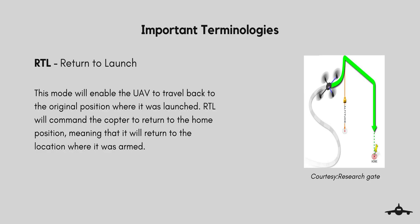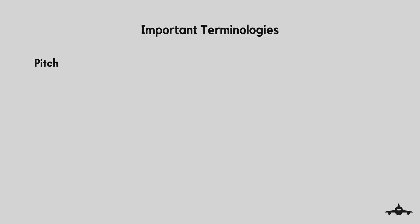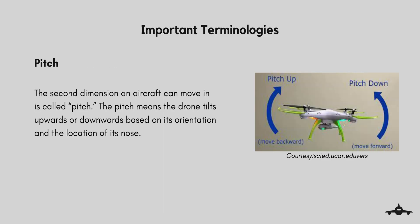RTL stands for Return to Launch. This mode enables the UAV to travel back to the original position where it was launched. RTL will command the copter to return to the home position. We will learn more about RTL in the upcoming sessions on sensors.